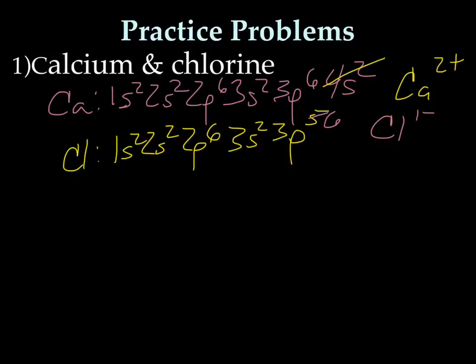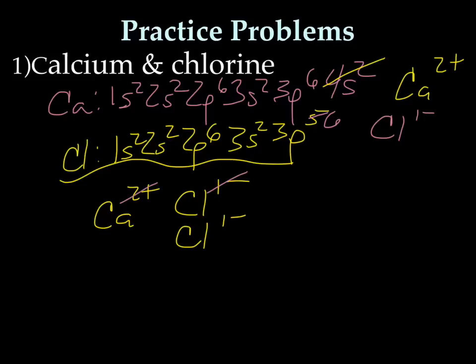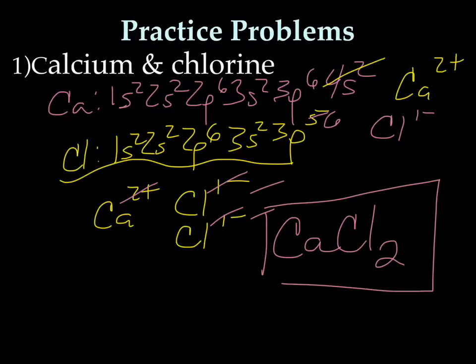So now let's write them side by side. Ca2+, Cl1-. Do our charges cancel out? They do not. So we could add another Cl1-. Do they cross out now? They do. We've got a 2+ and a 2-. So charges are gone. So our final answer is Ca. We only have one of them, so no subscript. Cl, we have 1, 2. So the ionic compound, the formula for the ionic compound calcium and chlorine, is CaCl2.